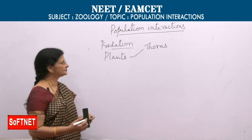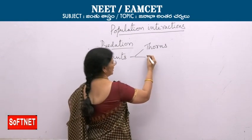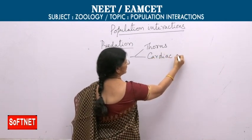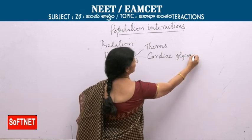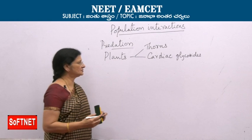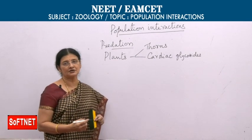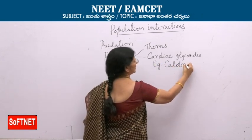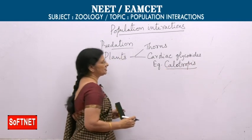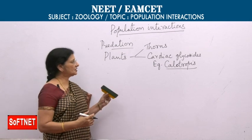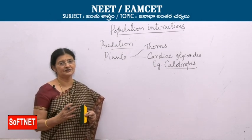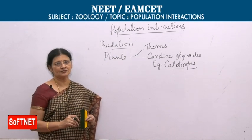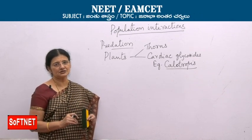Some plants like calotropes release chemical substances — not necessarily poisonous — such as cardiac glycosides. Calotropes produces cardiac glycosides, and because of these chemicals, many herbivores avoid this plant. The leaves and other parts are avoided by predators due to the presence of these chemicals.